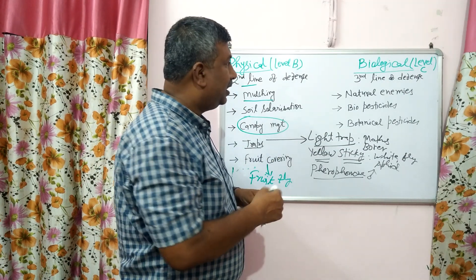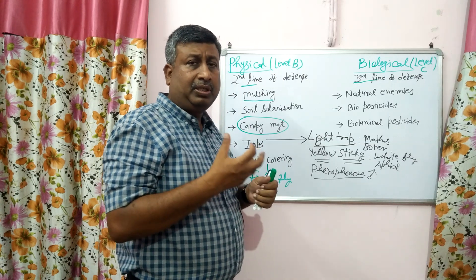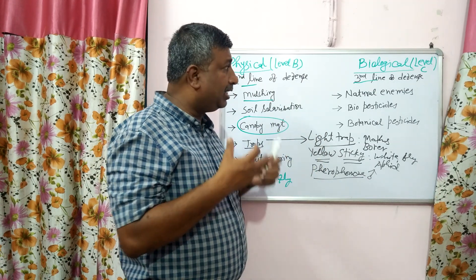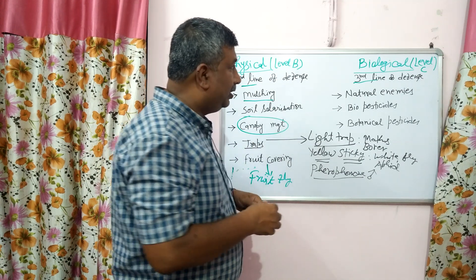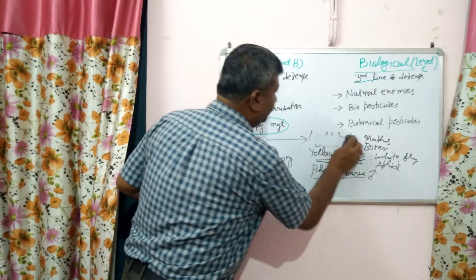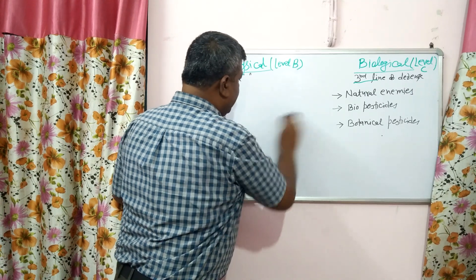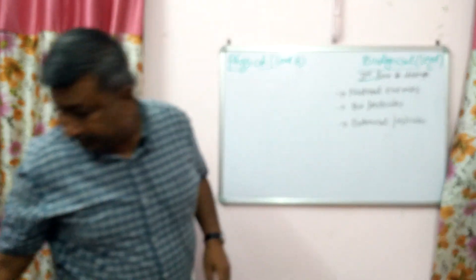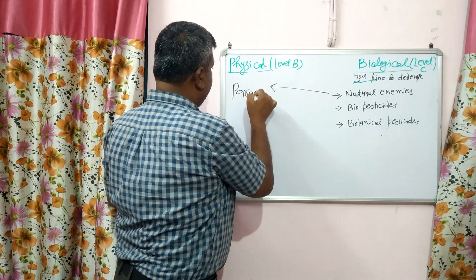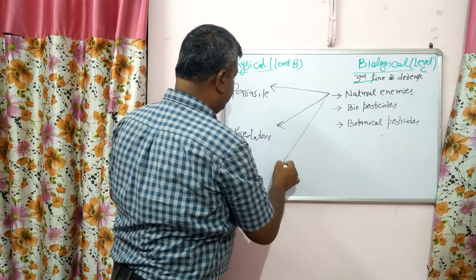Biological methods are considered the third line of defense. The major emphasis is on natural things and bio-agents. Natural enemies, biopesticides, and botanical pesticides are used in biological methods. Natural enemies present in nature include predators, parasites, and pathogens — these three are the main categories of natural enemies.